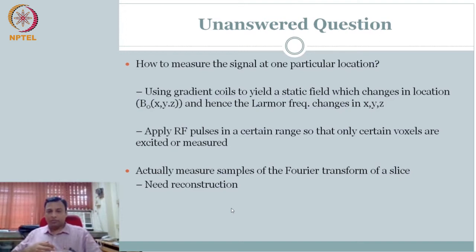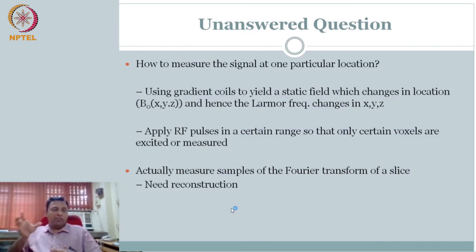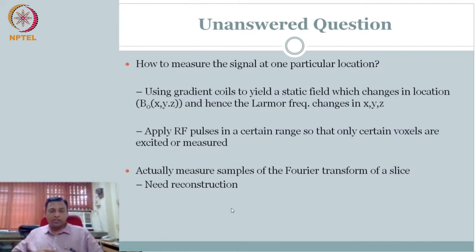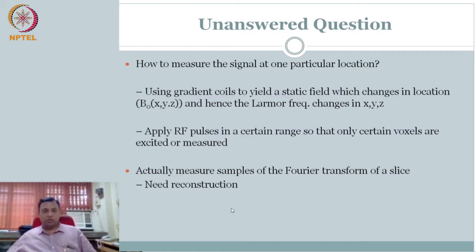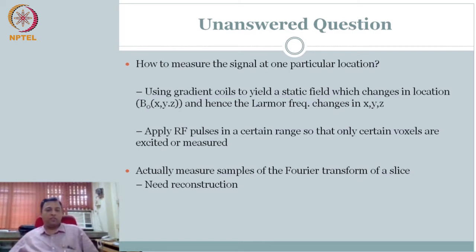It looks difficult to understand, but think about what you are doing: you are changing the Larmor frequency and measuring the signal. Your signal is the free induction decay. You can take the power spectra of that, which will have the Larmor frequency. Recall Parseval's theorem — you have some energy for that particular frequency. When the frequency changes at different locations, you have the frequency spectral information at different locations, meaning you are measuring the Fourier transform directly. What you want is the object itself, not the Fourier transform, so you reconstruct it. What we are measuring is the energy in different frequencies — the Fourier spectra. We will get to that, but start to appreciate it. Now we go to instrumentation first.